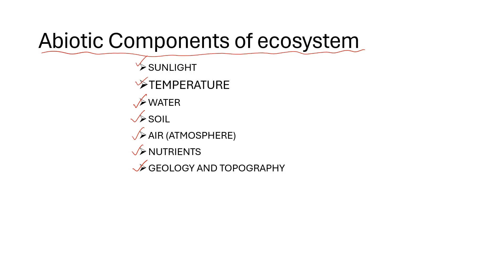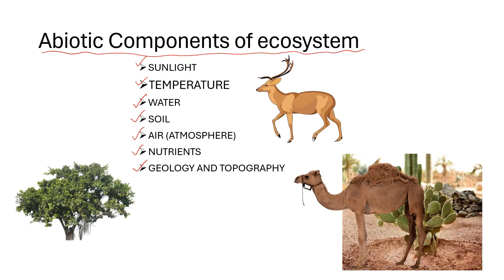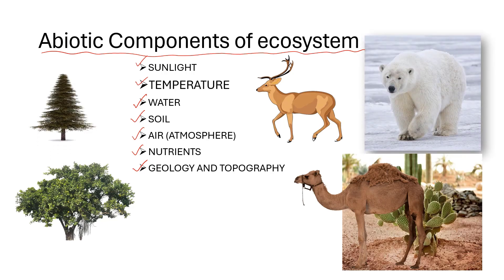For instance, in arid regions such as deserts, there is limited vegetation and only specific organisms can survive. Organisms adapt to different climates in various ways. For example, in cold regions, animals have thick fur or feathers to keep them warm, while some animals hibernate during the winter months. In hot and dry regions, animals have adaptations that help them conserve water, such as the ability to store water in their bodies or go without water for long periods.